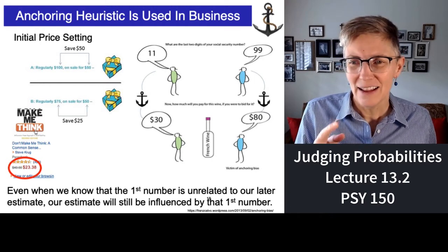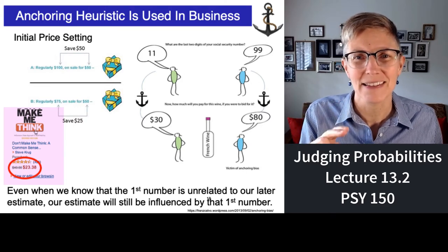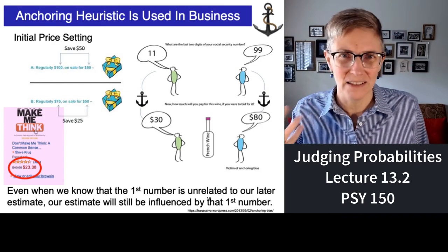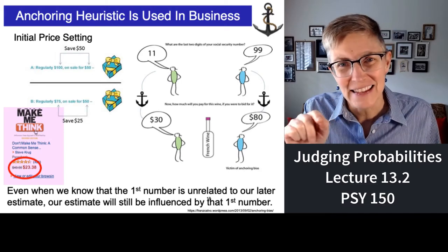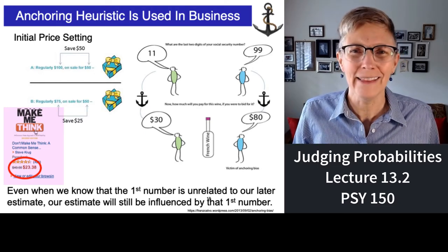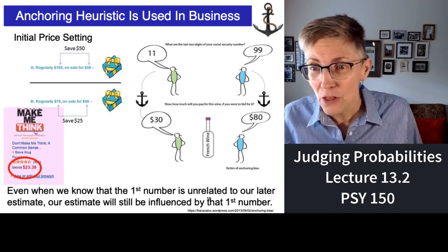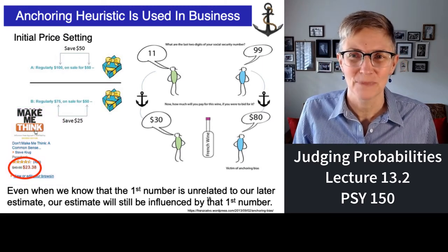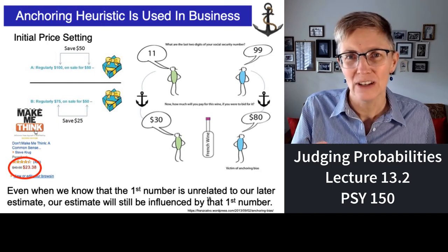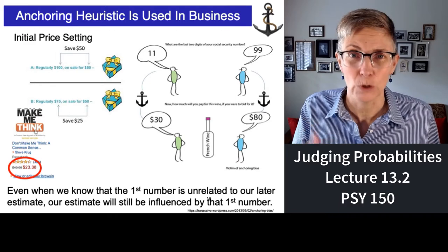Next time you do some shopping at Amazon, notice something: they almost always list two prices. The first one is smaller and crossed out — that's supposed to be the cost at other places. Then there's the Amazon price, larger and in red font. Why add a price and then cross it out? Anchoring — because it makes that $23.38 price look really, really good. Anchoring occurs when the first number you encounter influences your later estimates or anything else involving numbers.